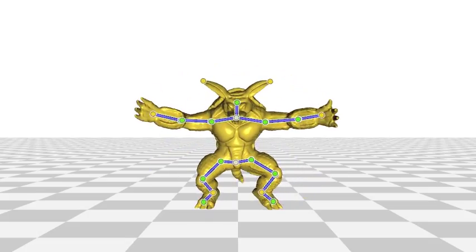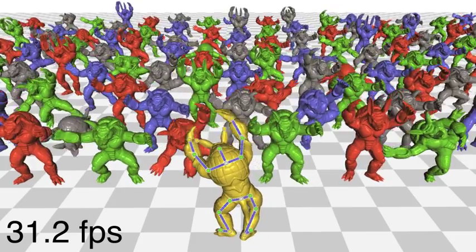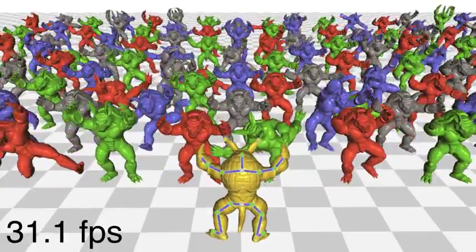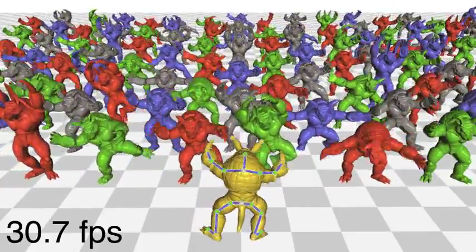In fact, it is sufficiently fast to process 100 such armadillos individually on a single CPU thread. The linear blend skinning itself is computed on the GPU.